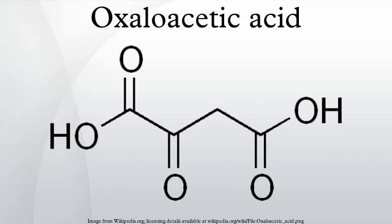Oxaloacetic acid is a crystalline organic compound with the chemical formula HO2CC(O)CH2CO2H. In the form of its conjugate base oxaloacetate, it is a metabolic intermediate in many processes that occur in animals. It takes part in gluconeogenesis, urea cycle, glyoxylate cycle, amino acid synthesis, fatty acid synthesis, and the citric acid cycle.